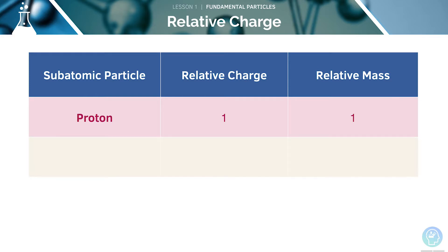Next, we'll look at neutrons. These have a relative charge of zero, but they have a relative mass the same as a proton, which would be one.